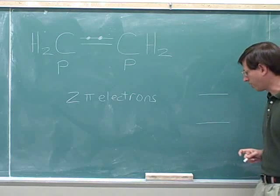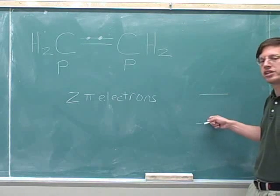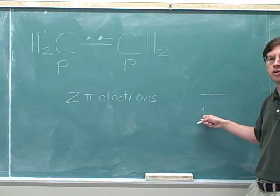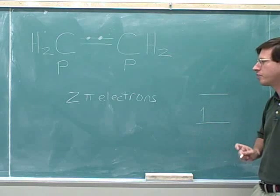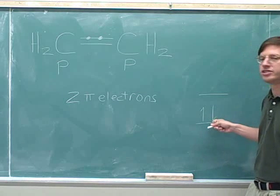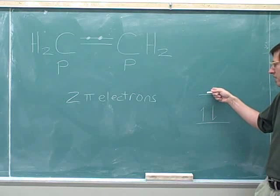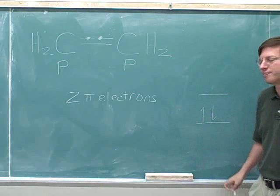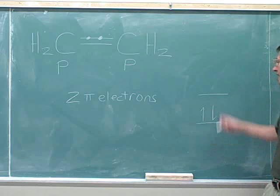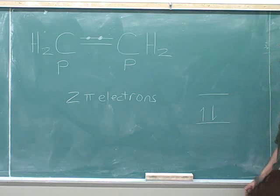According to the Aufbau principle, we always try to fill the lower energy levels first. So we'll put the first electron in the lower energy level, and the second electron also goes in the lower energy level. There's no need to put any electrons in the high energy level because we only have two electrons. Now we have our pi energy levels, and we've shown all the pi electrons in this molecule.